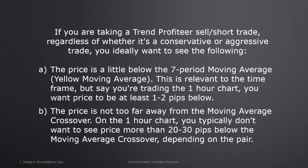If you're taking a Trend Profiteer sell or short trade, regardless of whether it's a conservative or aggressive trade, you ideally want to see the following — the opposite of the buy trades we've looked at. The price should be a little below the seven-period moving average — the yellow moving average. For the one-hour chart, you want price to be at least one to two pips below, just to show momentum and willingness from the market to drop. Also, the price should not be too far away from the moving average crossover — typically not more than 20 to 30 pips below it, depending on the pair.